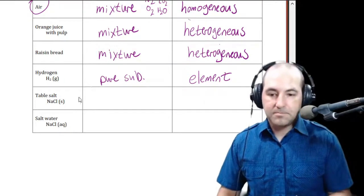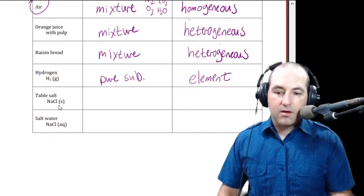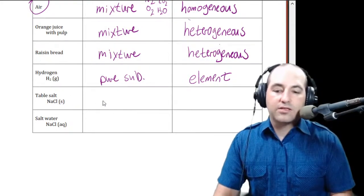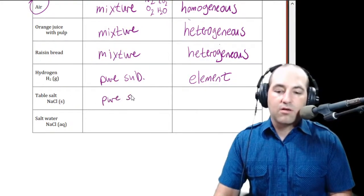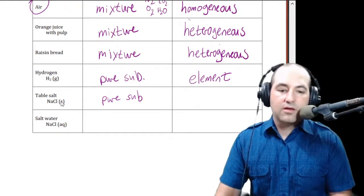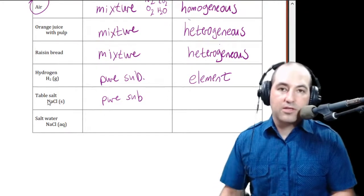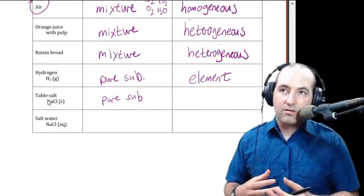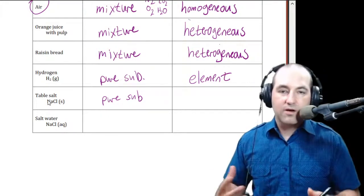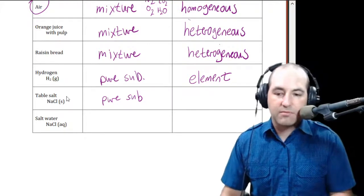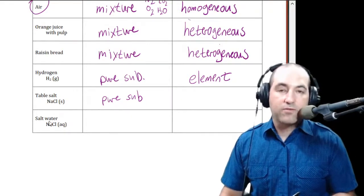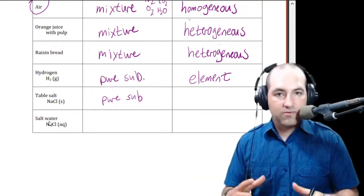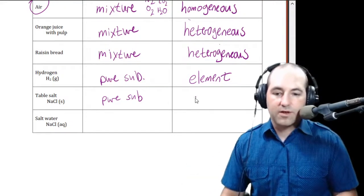For table salt we have NaCl — again that is a pure substance. We can see by the formula that the elements are somehow chemically bound together. In the next couple of chapters we'll talk about what that interaction looks like and what that bond means. For now we can just go by the formula and say if all those elements are mashed together in the same formula, we know they're part of the same thing, so that's a compound.